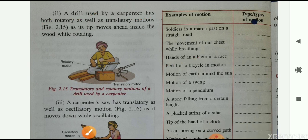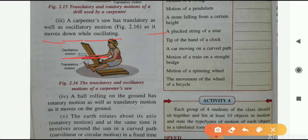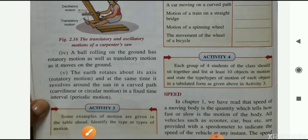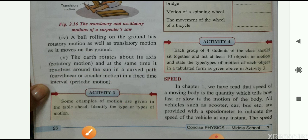A carpenter's saw has both translatory and oscillatory motion as it moves downward while oscillating. A ball rolling on the ground has both rotatory and translatory motion as it rotates while moving along the ground. The earth rotates about its own axis (rotatory motion) and at the same time revolves around the sun in a curved path (curvilinear or circular motion) in a fixed time interval (periodic motion) — so this is also an example of mixed motion.